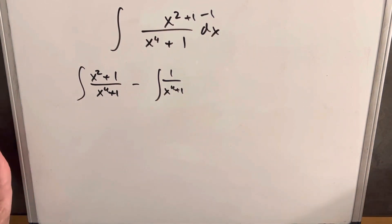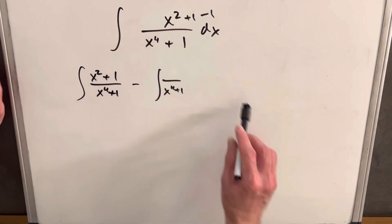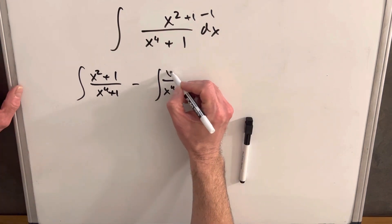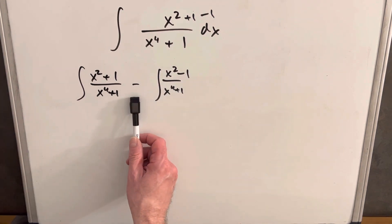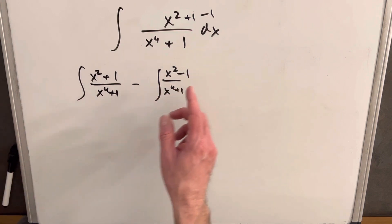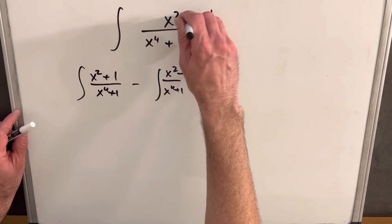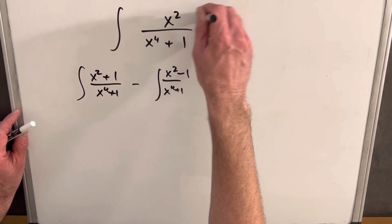Instead of this, what I could do is I also know how to integrate x squared minus 1. Now, this is pretty nice if we split it this way. The only problem is we can't change our numerator. We need to get this back to x squared.